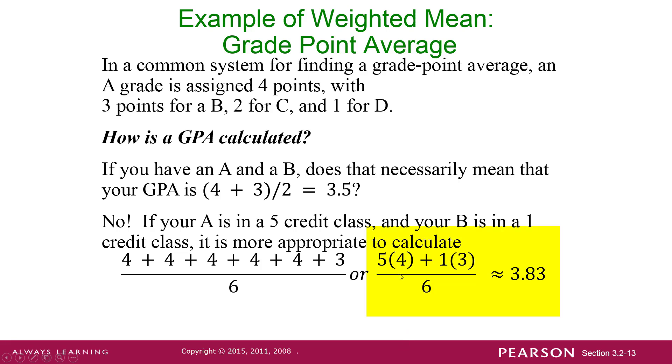Or in other words, you multiply the weight, 5, times your score, 4, and the weight, 1, times 3, and then add those two together and divide by not the number of classes, which is 2, but the number of credit hours. That's right.